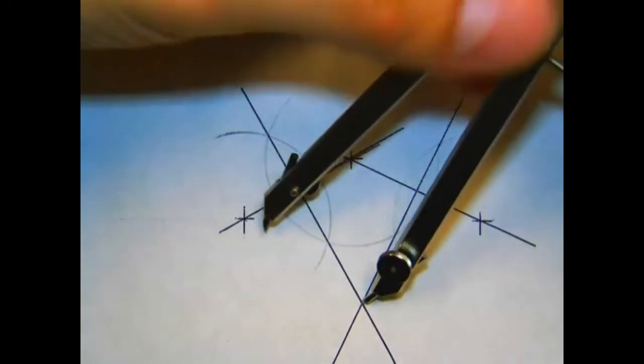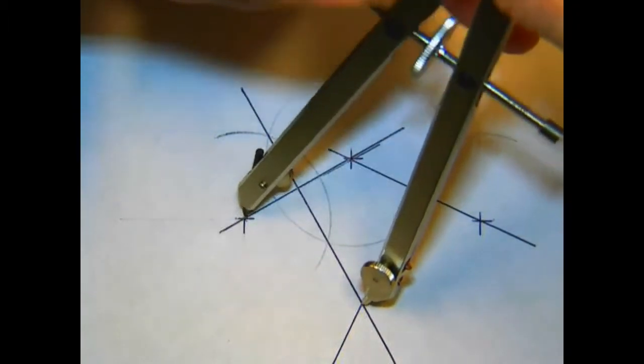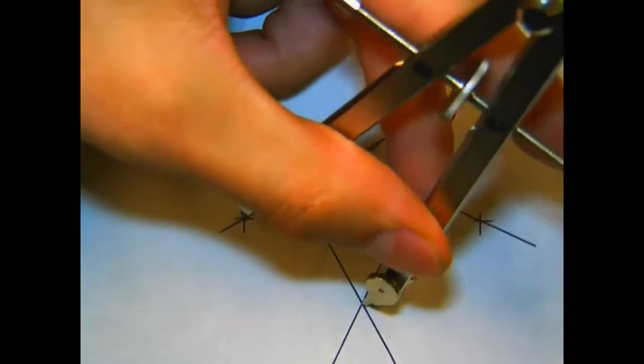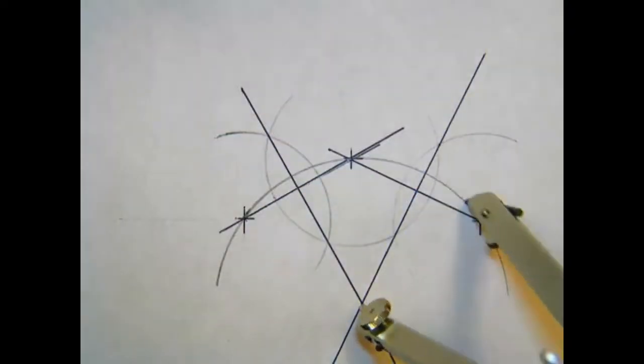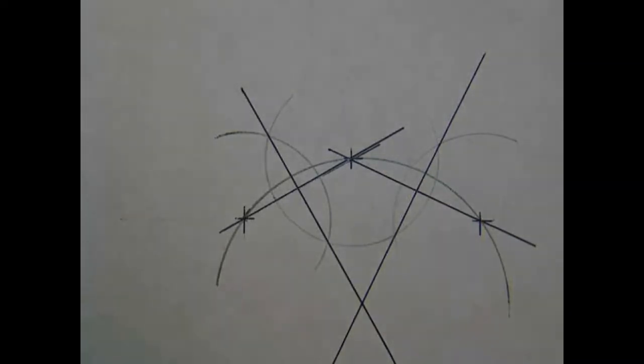Set your compass center point on that intersection and bring your compass out to one of the points—it doesn't matter which one. Finally, draw your arc or circle, and there you have an arc or circle through three points.